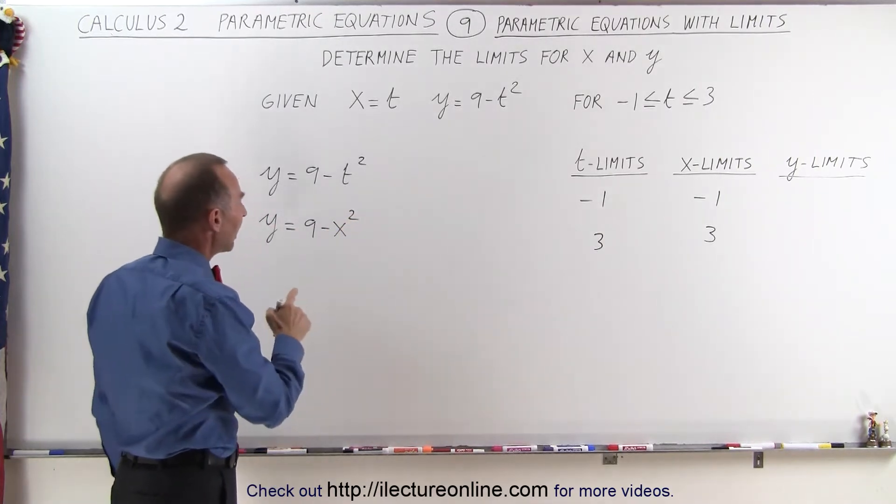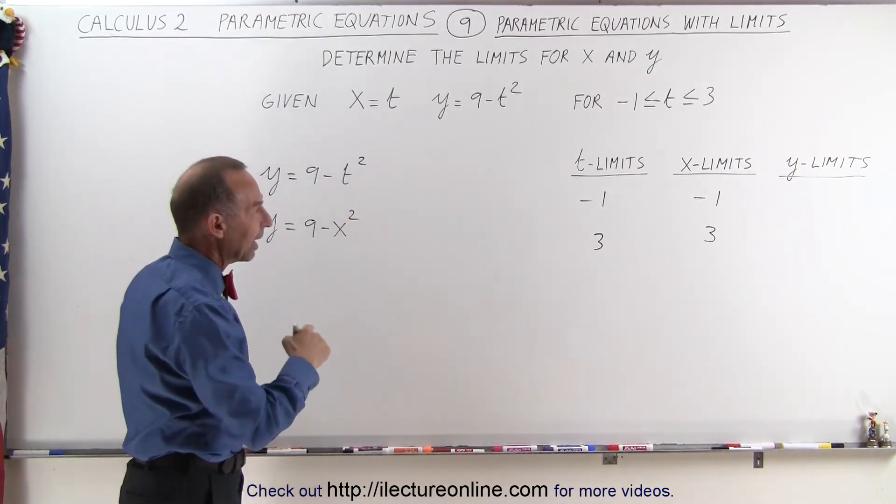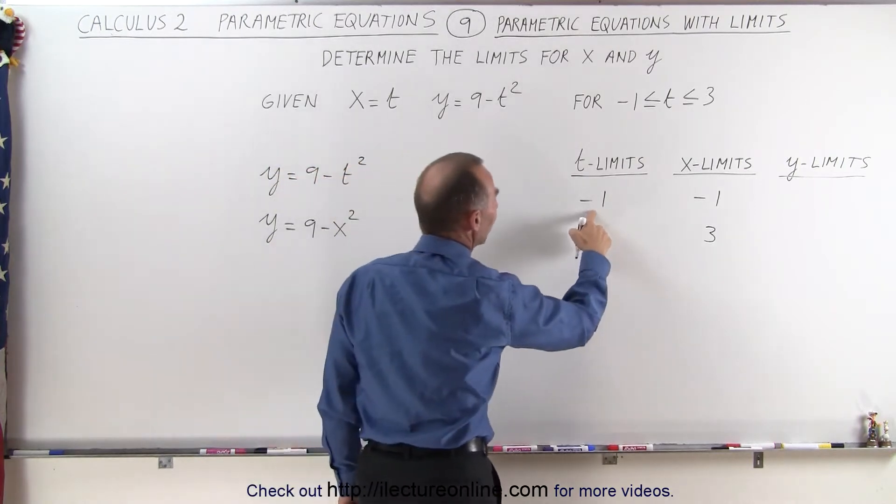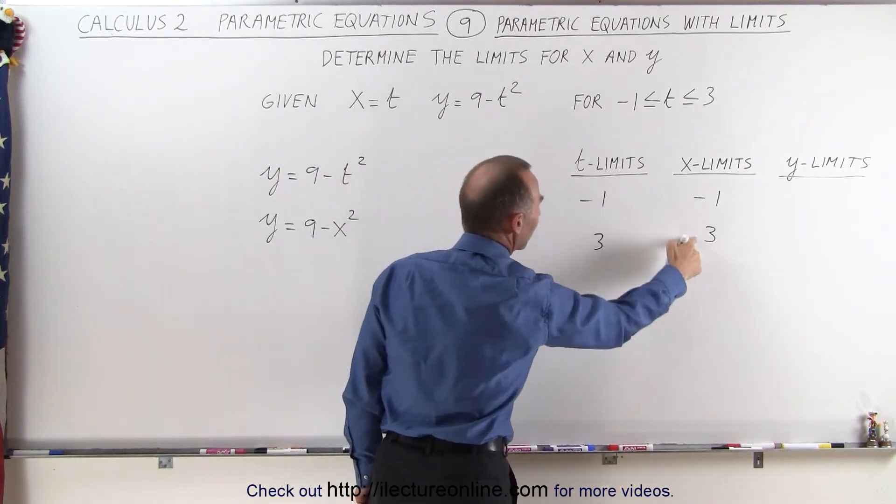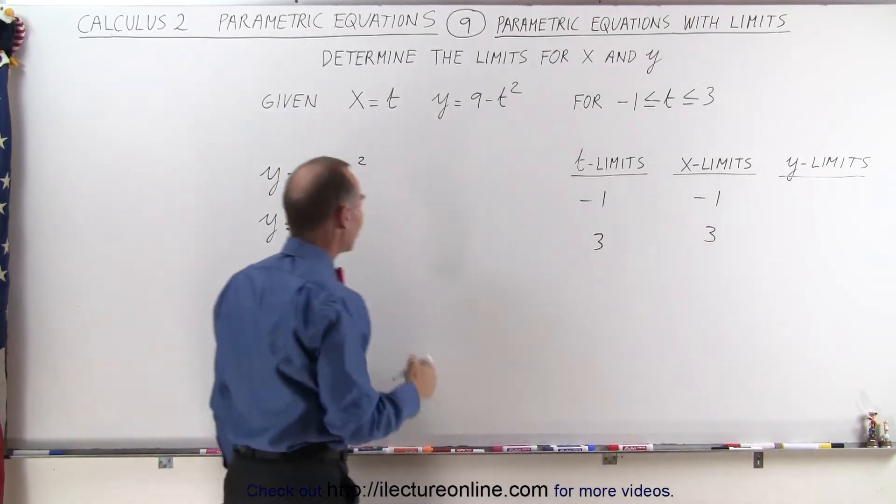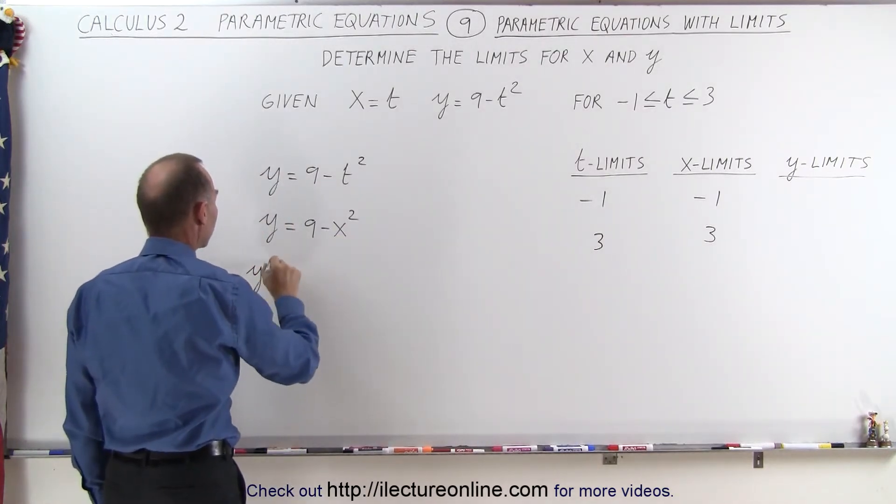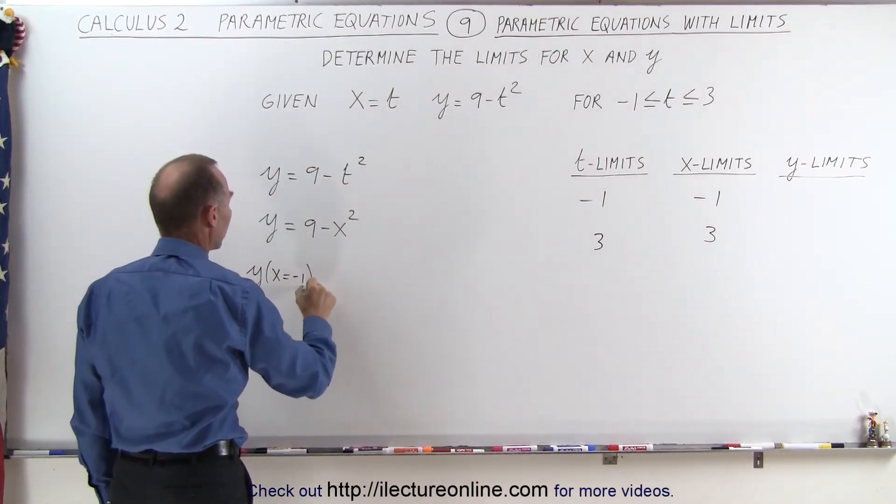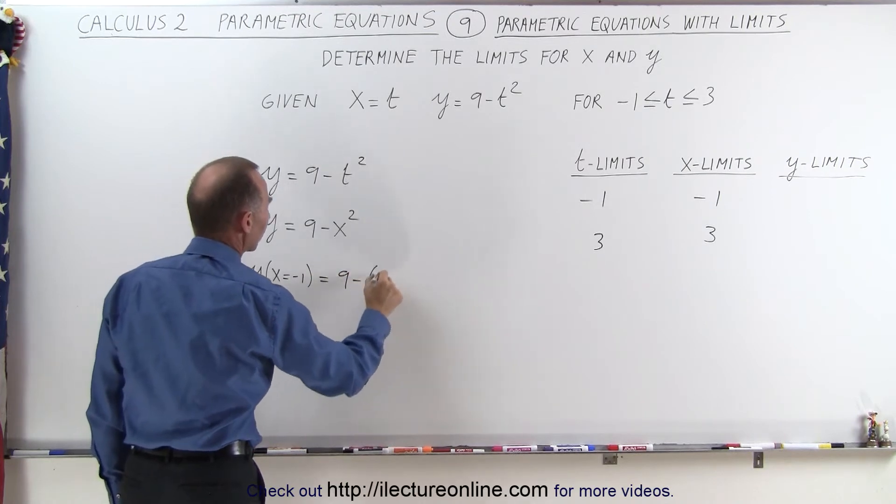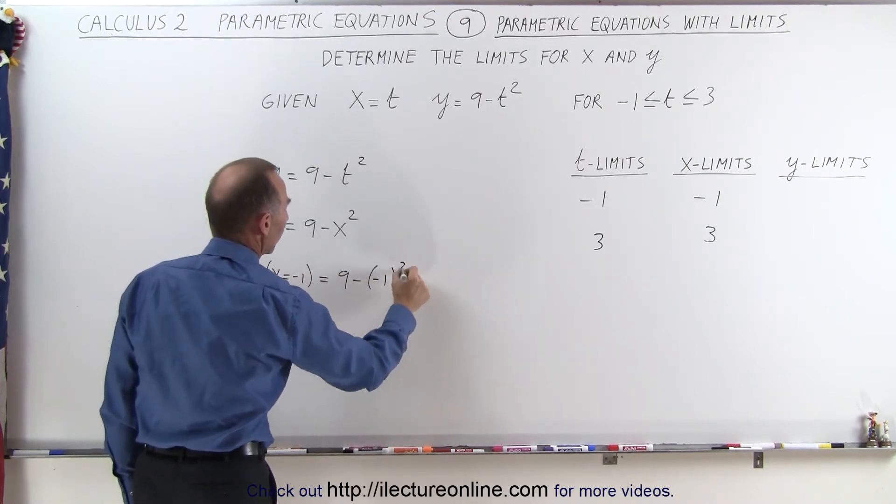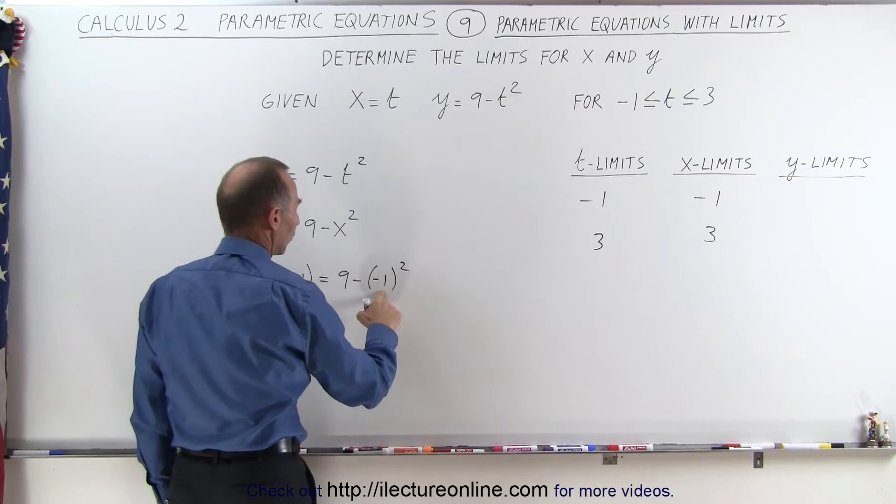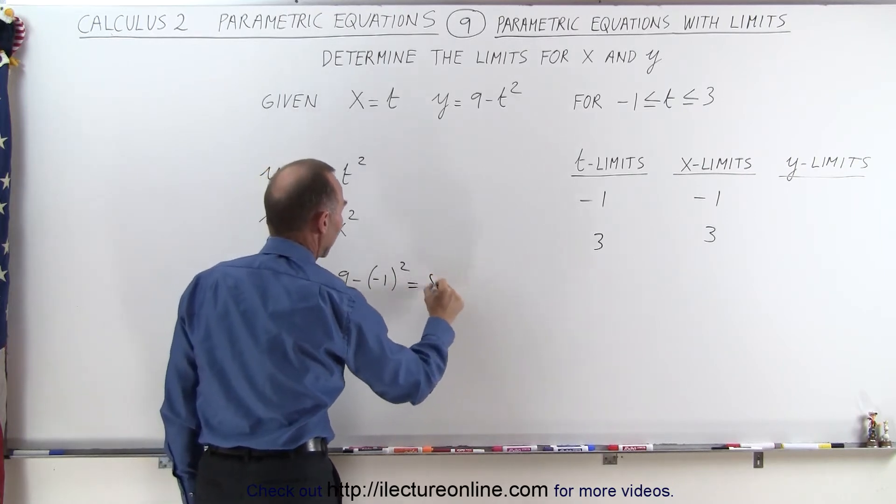Now, if we go ahead and plug the limit values of minus 1 for x and plus 3 for x into the equation, we get the following. y, when x is equal to minus 1, is equal to 9 minus the quantity minus 1 squared. That's 1. 9 minus 1, that's equal to 8.